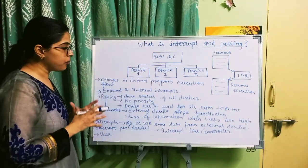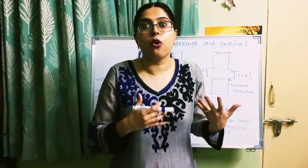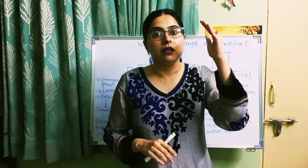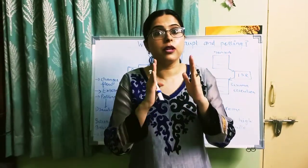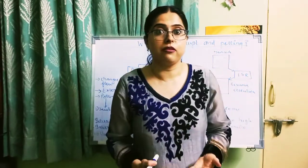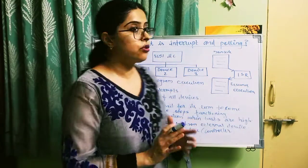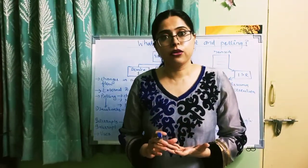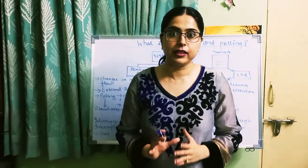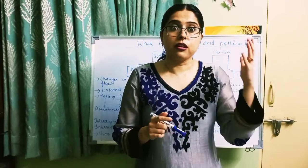Now let's see when the interrupt occurs. When there is one external device connected with the 8051 microcontroller and it wants to communicate with the microcontroller, it sends the interrupt signal to the microcontroller, and the microcontroller executes that interrupt. Interrupts occur when there has to be communication between the external device and the 8051 microcontroller — read or write operation with the external device. Interrupt pin of a device is connected to the interrupt line of the controller. Every external device connected with the microcontroller should have an interrupt pin, and that interrupt pin is connected with the interrupt line of the microcontroller. When the interrupt signal is generated by the external device, via that interrupt line, the microcontroller receives that interrupt.